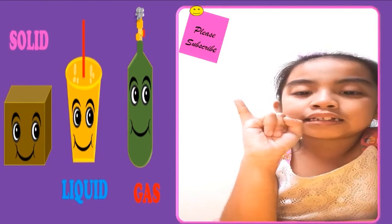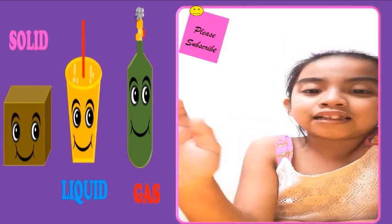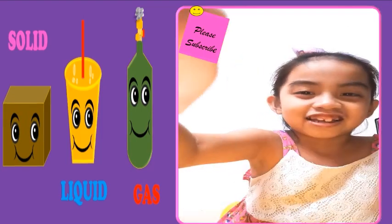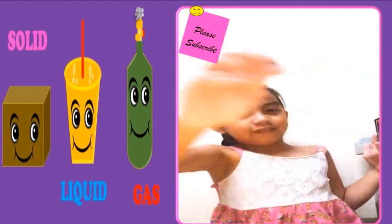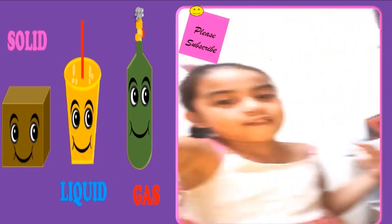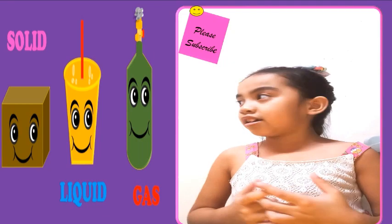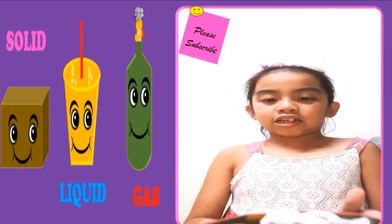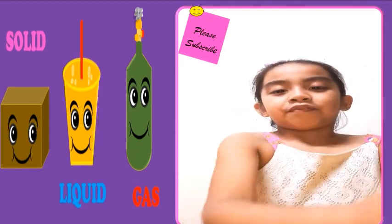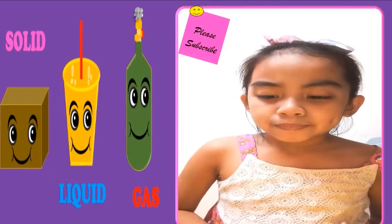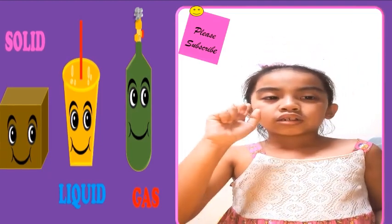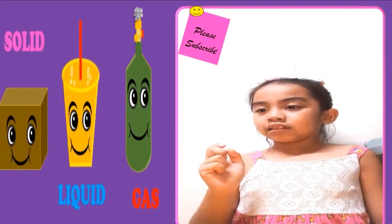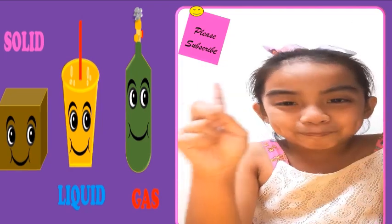Solid is a thing that is hard, like a table, shelf, TV, and shelter. Solid does not change shape, but if it is broken, it can be a different shape.